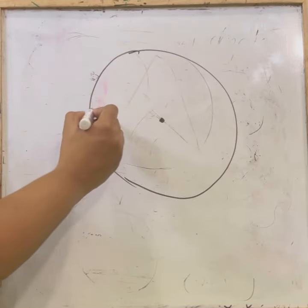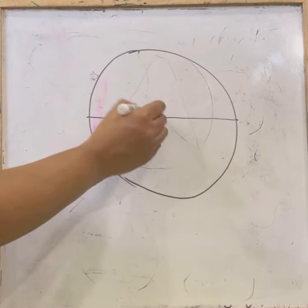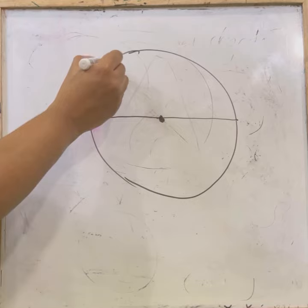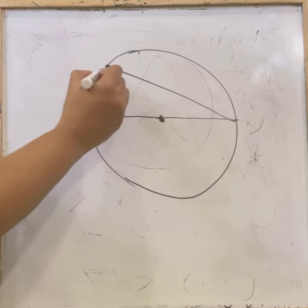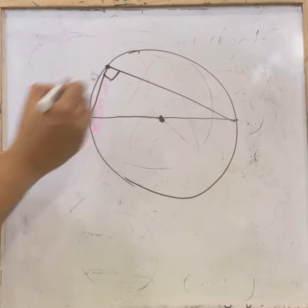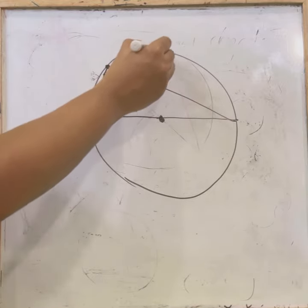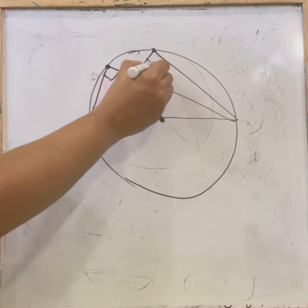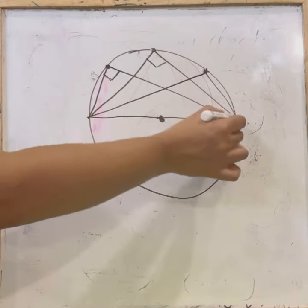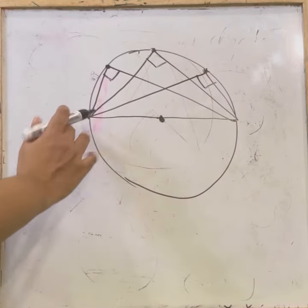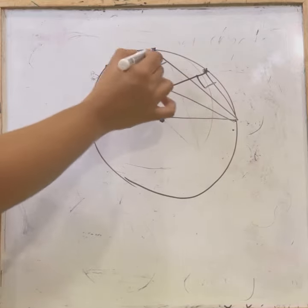Next theorem: if we have a diameter passing through the center and another point on the circle, the angle formed at that point will always be a right angle. Whether the point is here, here, or anywhere on the semicircle, joining it to the two ends of the diameter always gives a right angle. In a semicircle, the angle is always 90 degrees.